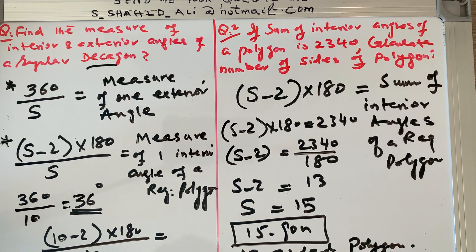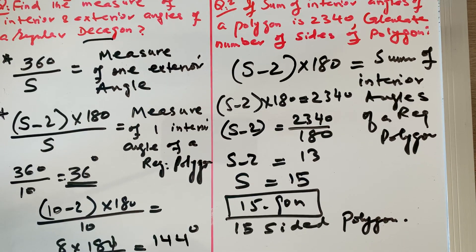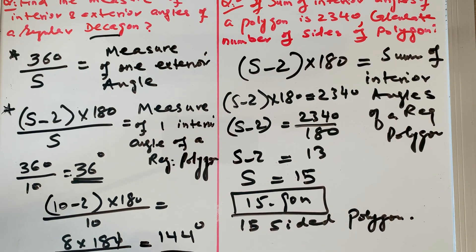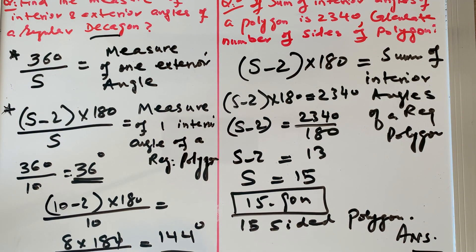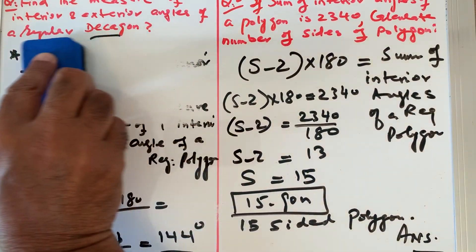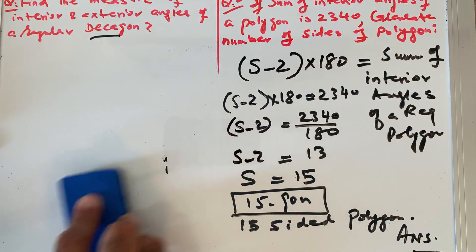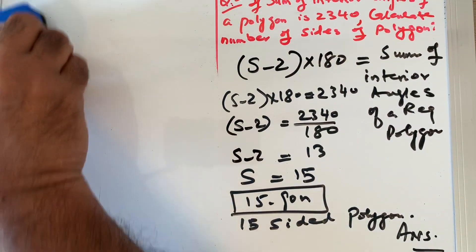So the answer is a 15-sided polygon — a 15-gon. This was straightforward: we used (s minus 2) times 180 equals the sum of interior angles. The sum was given as 2340, which gives us 15 sides. In this same topic there is another sort of problem we can look at.